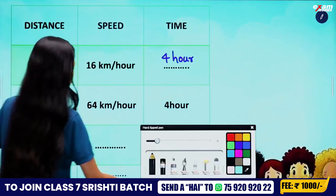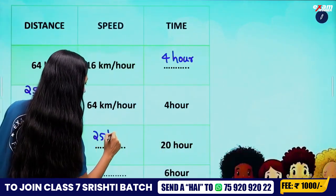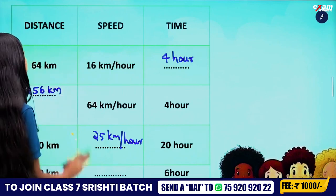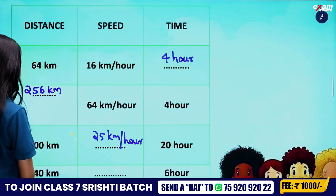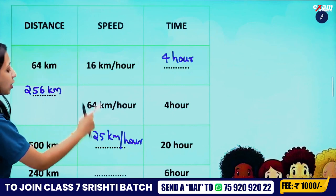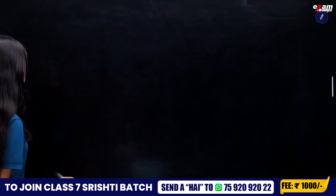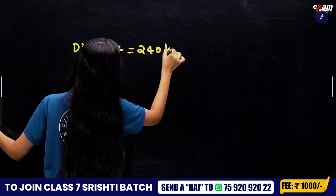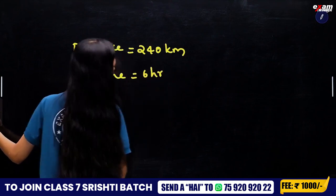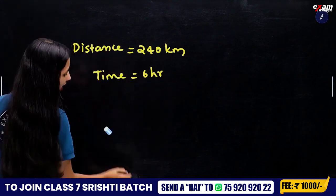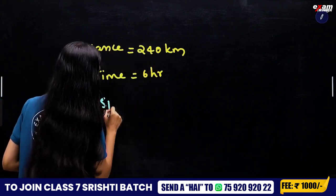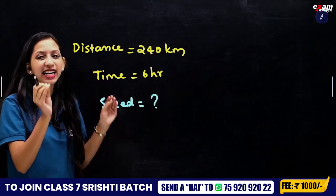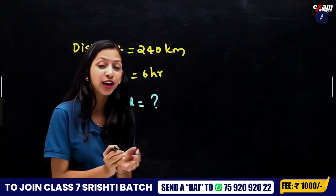Now we have the third question. We have time, distance and speed. The last one: distance is 240 km, time is 6 hours, and speed is not given. How do we answer the speed? I will answer the question — we have already done the third one.